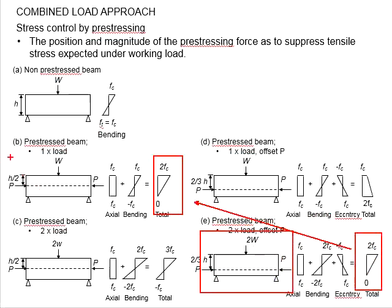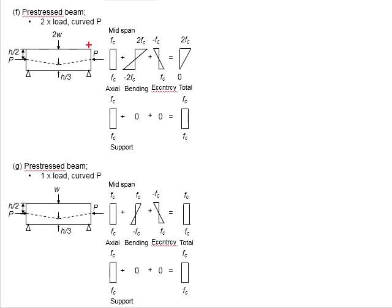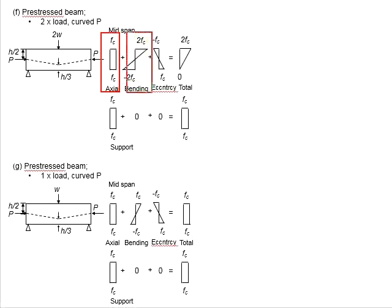This demonstrates how the position and magnitude of the pre-stressing force govern the final stress acting on the member. All the previous examples had constant tendon positions throughout the member. What if the position of the tendons varies along the member? For example, there may be maximum eccentricity at the mid-span and no eccentricity at the end span. With the load at two times the magnitude, you need to check two locations: the mid-span and the end span. The mid-span is influenced by axial compression, two times the load causing bending, and the effect of eccentricity.